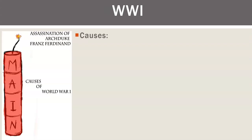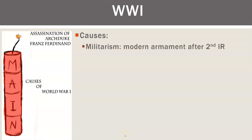Let's look at the causes of World War I. Militarism — the first Industrial Revolution starts around 1750 to 1850, and the second Industrial Revolution is after 1850, primarily involving communications and chemicals, more modern things. You're getting more modern armament like the machine gun.